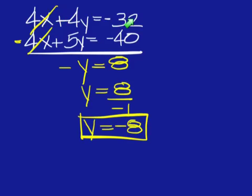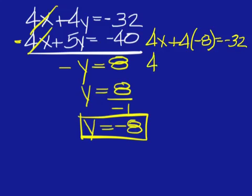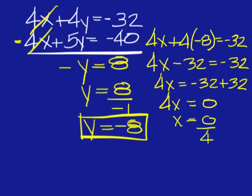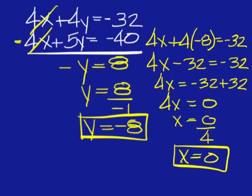Now plug that into either this equation or this one. I will use the top one. That would be 4x plus 4 times negative 8 equals negative 32. Simplify that and then move to the other side. Change the operation. Simplify. Divide. Get the answer. And the final answer is 0, negative 8.